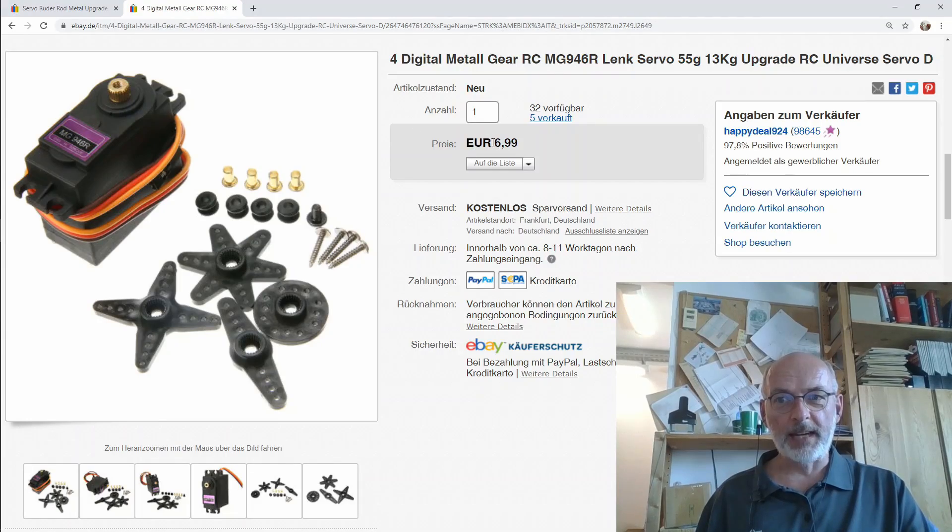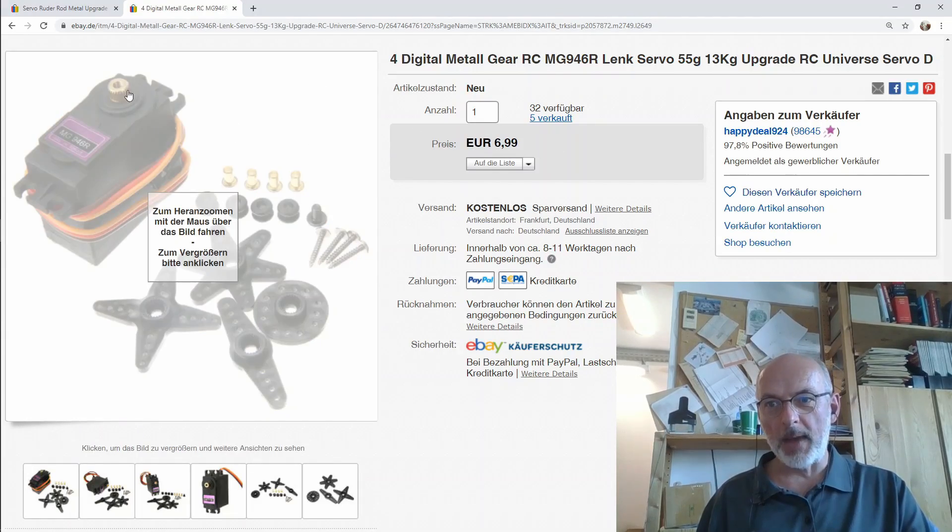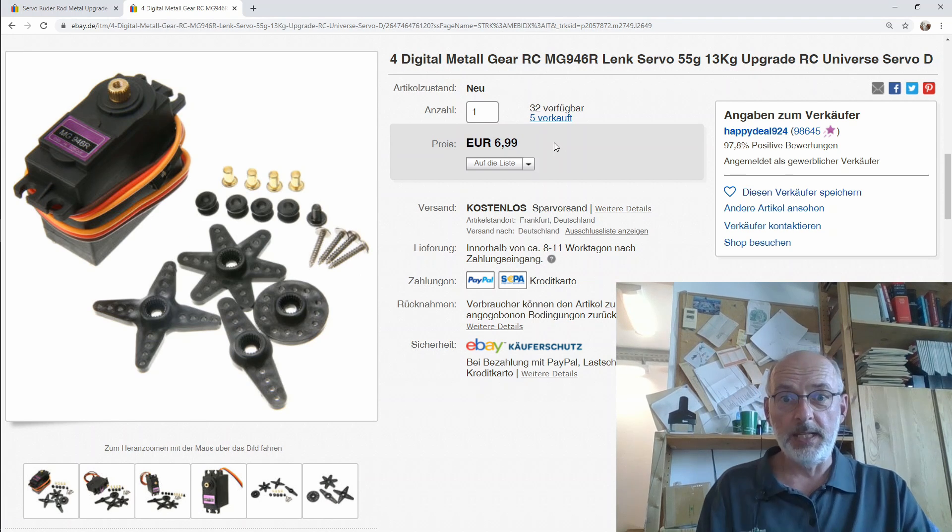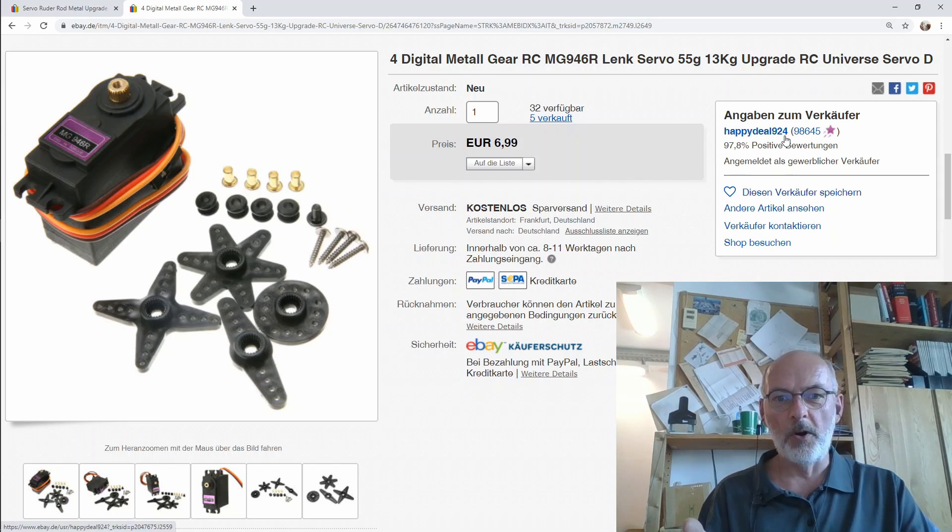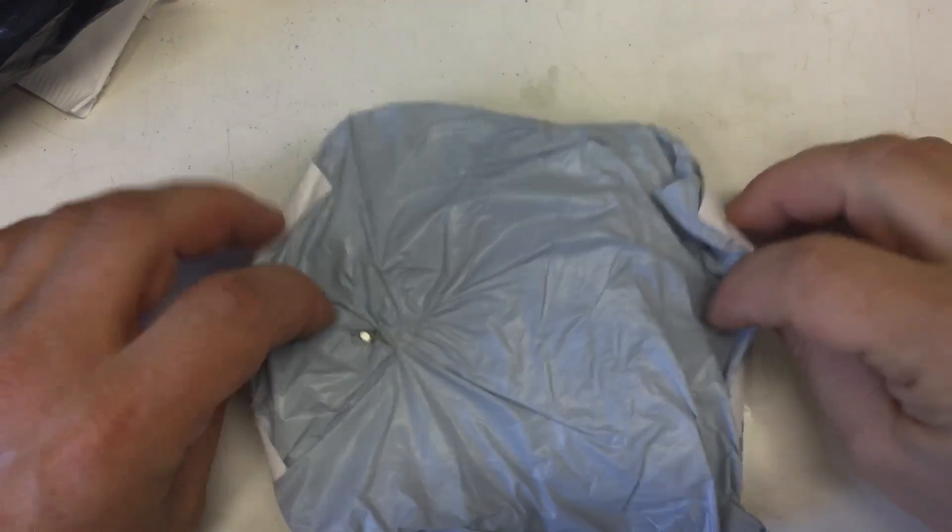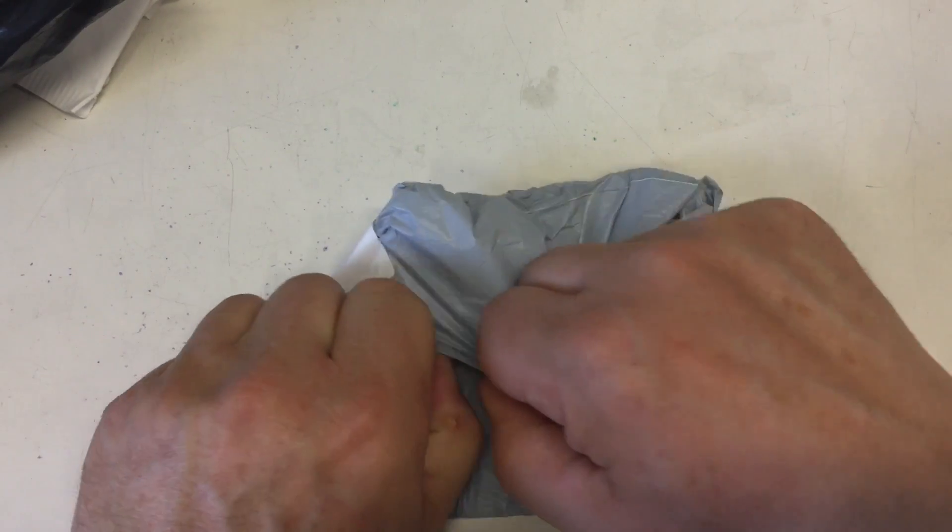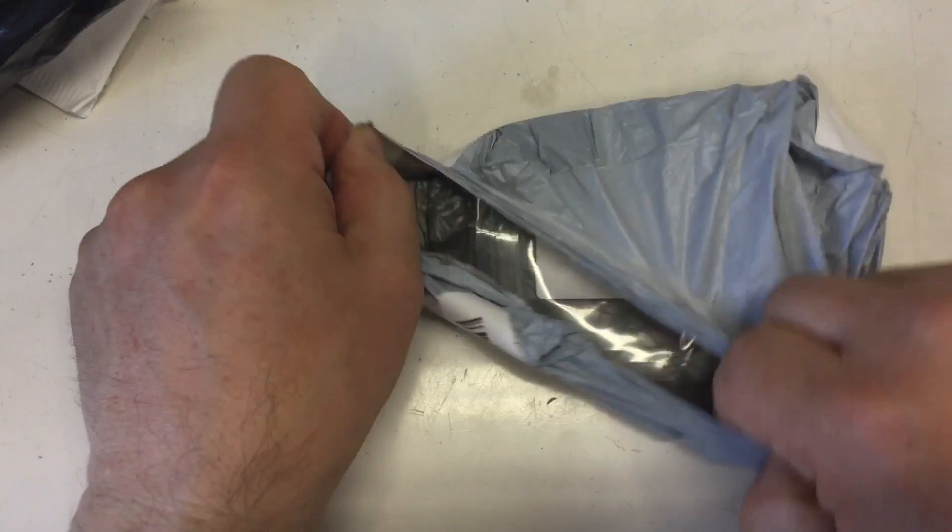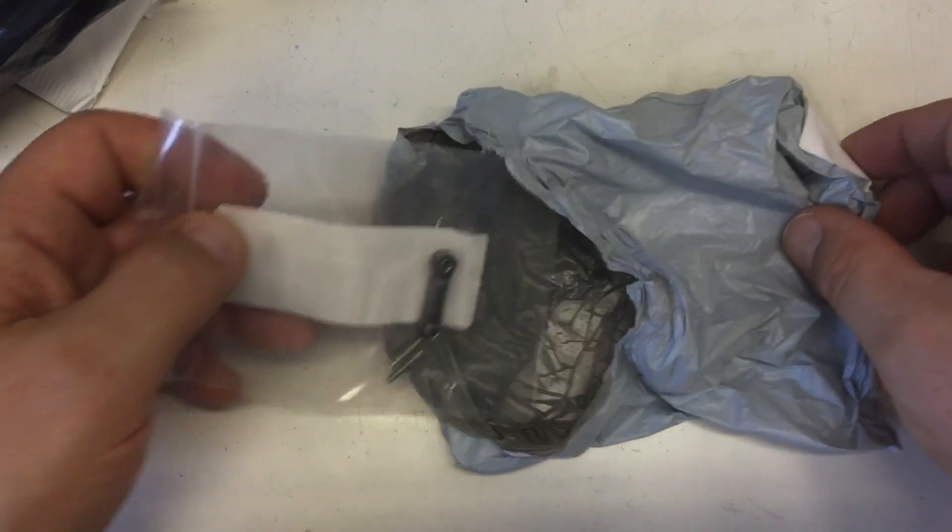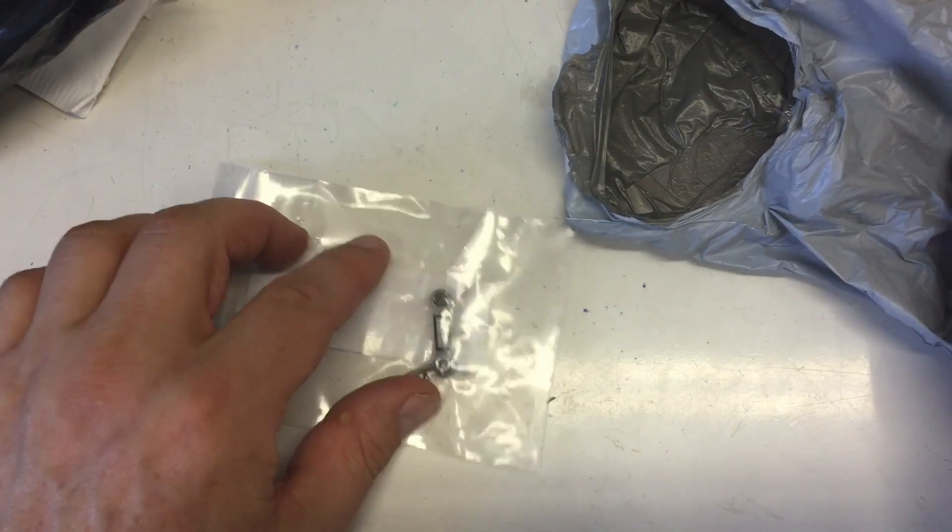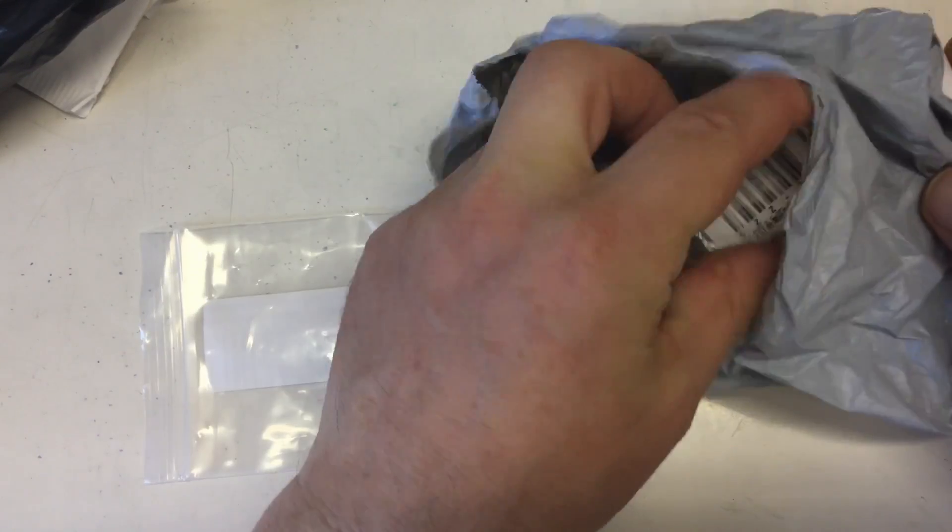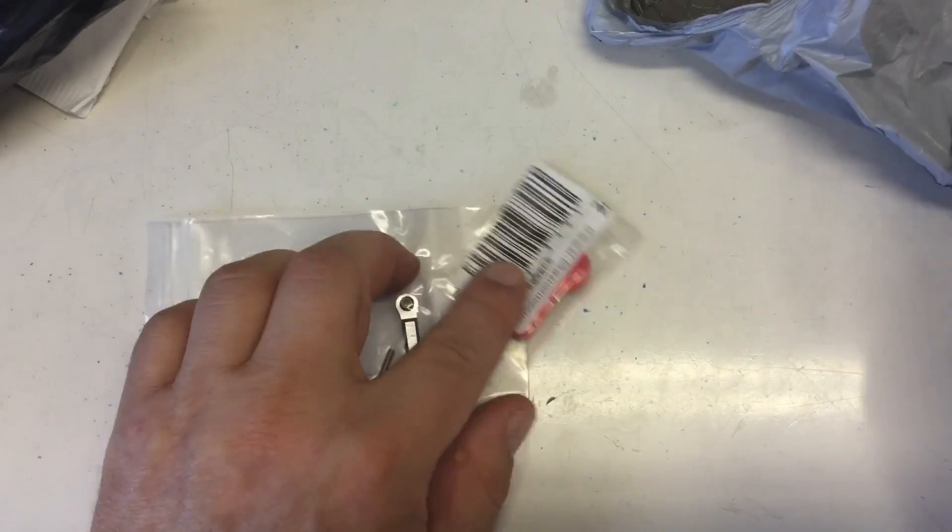As I mentioned, that was the cheapest Metal Gear servo I could find on eBay for $6.99. Free shipping from Happy Deal 924. And we have another Chinese looking, but sent from within Germany mailbag here. And this contains... And oh, there's more. And that's it.